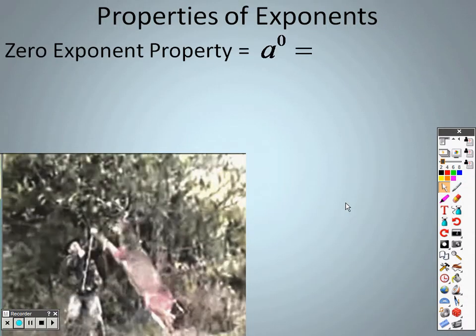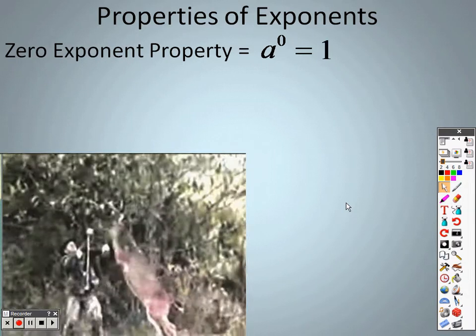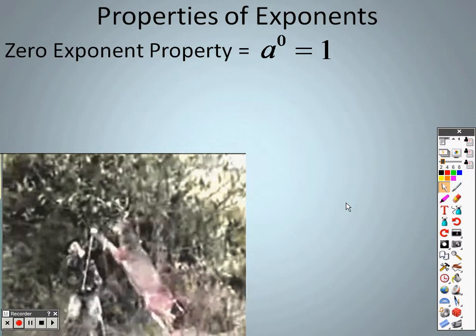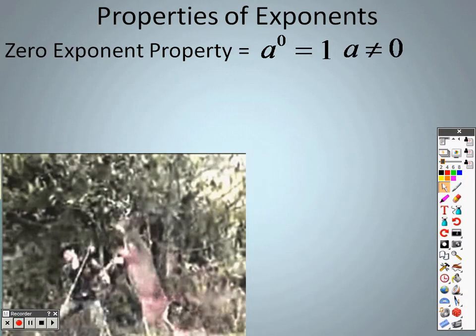The 0 exponent property is basically stating that anything to the 0 power is going to be 1. It doesn't matter what it is. Dog to the 0, a to the 0, 4 to the 0. It doesn't matter whatever it is. It's going to give you 1 as your answer. So 2 to the 0 is 1.